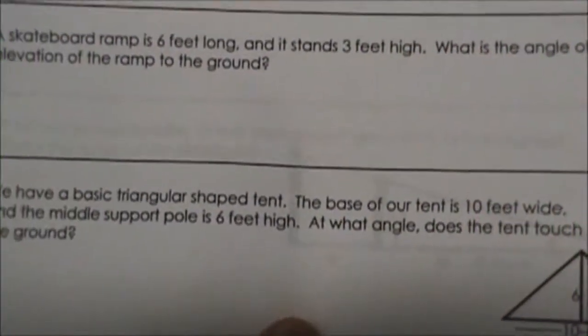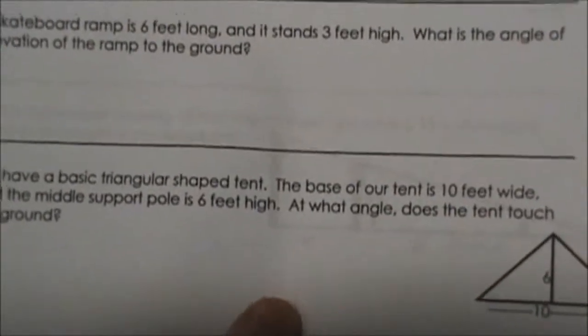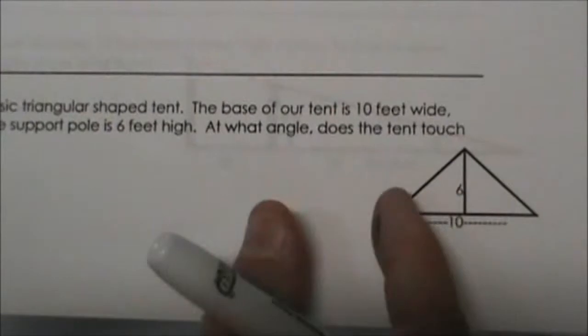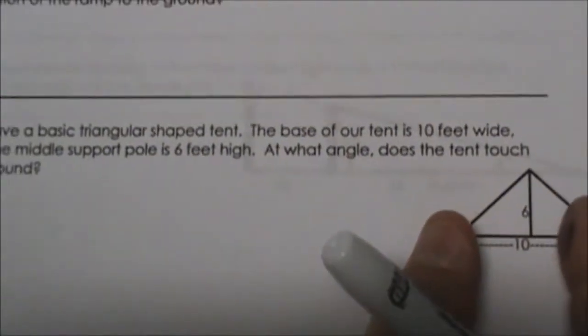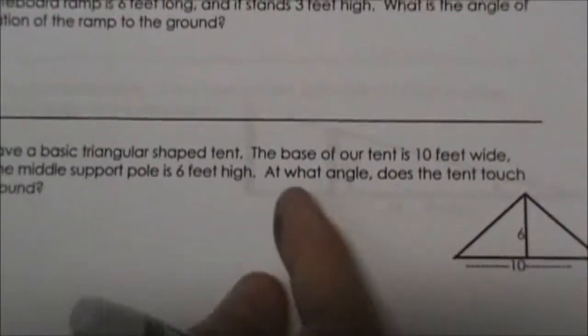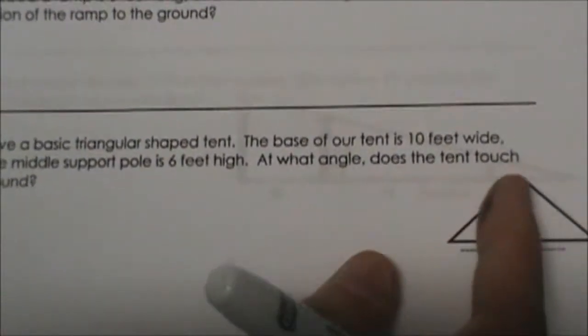We have a basic triangular shaped tent. The base of the tent is 10 feet wide and the middle support is 6 feet high. At what angle does the tent touch the ground?